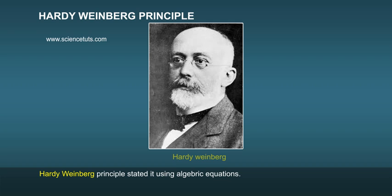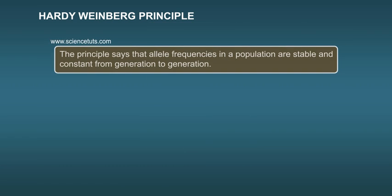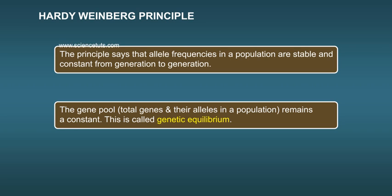Hardy-Weinberg Principle stated it using algebraic equations. The principle says that allele frequencies in a population are stable and constant from generation to generation. The gene pool, total genes and their alleles in a population, remains constant. This is called genetic equilibrium.